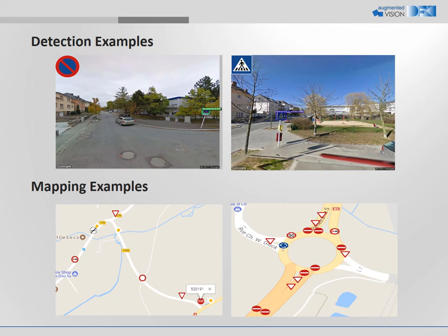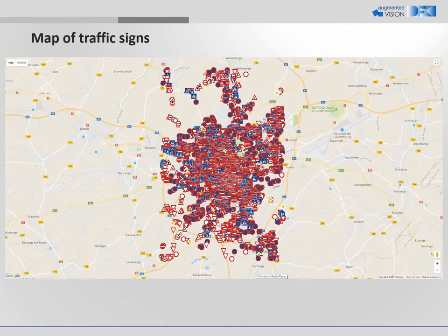Each street view image is associated with GPS information too. As can be seen in the mapping examples, this GPS location can be used to plot the detected traffic sign on the map. Here, we show several plotted traffic signs on the map in street view.